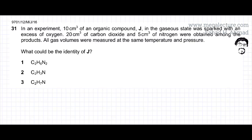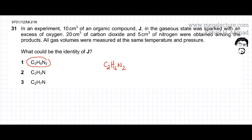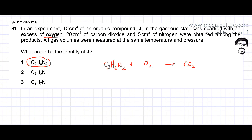I am going to pick the first compound and make an equation. So I have C₂H₆N₂, and the question states that it was sparked with an excess of oxygen, so it is reacting with O₂. It produces carbon dioxide CO₂, and the question states that it produces nitrogen N₂ as well.